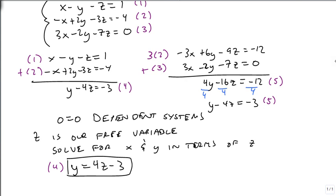We then go back and we pick our favorite equation. And I like 1 because the x is positive and it's just itself. And wherever we see a y, we're going to put 4z minus 3. Notice the parentheses. Minus z equals 1.